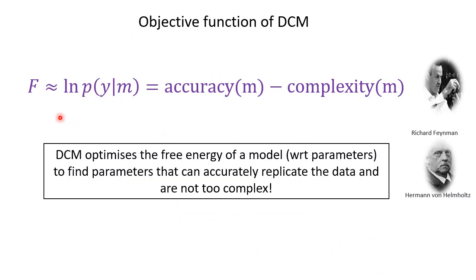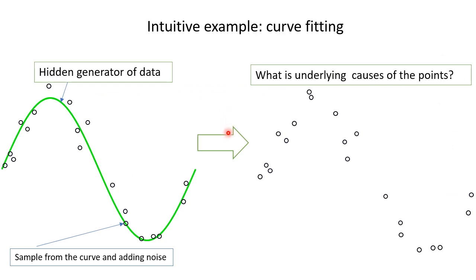Free energy, also known as evidence lower bound, of a given model is a numeric equal to model accuracy minus model complexity. DCM optimizes the free energy with respect to unknown model parameters, to infer parameters that accurately replicate the data and are not too complex. This effectively decreases the chance of overfitting in DCM. We shall establish an intuitive understanding of model complexity through an illustrative example and explore how free energy aids in finding an optimal solution.